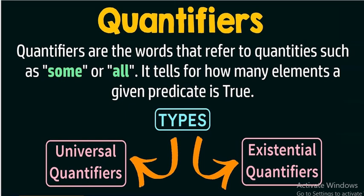Hello, welcome back. We are here to continue learning mathematical reasoning. For today, our subtopic is going to be quantifiers. Quantifiers are words that refer to quantities — such as 'some' and 'all.' Quantifiers are of two types: universal quantifiers and existential quantifiers. The universal quantifier is represented by an upside-down A symbol.